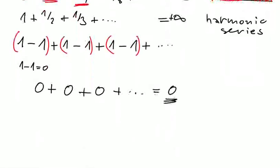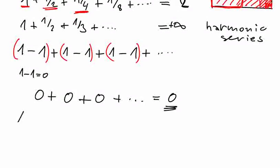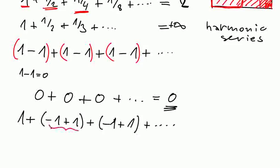Now let me group these numbers in some different way. For example, what we can do is take the first one as it is, and now we take plus minus 1 plus 1. Now we take the second and the third number, plus the fourth and the fifth number, and so on. This thing here is again equal minus 1 plus 1 equals 0. So now we have 1 plus 0 plus 0 and so on, which is nothing else than 1.